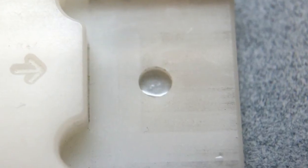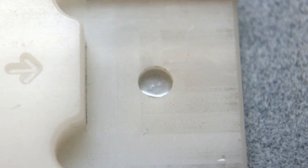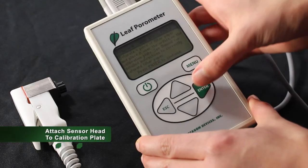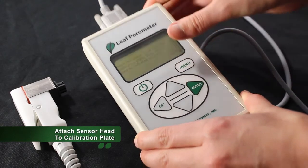If excess water is observed, remove the filter paper, dry the calibration plate, and repeat the wet and flick procedure with a more aggressive flick. With the moist filter paper in place, press enter on the porometer control unit.